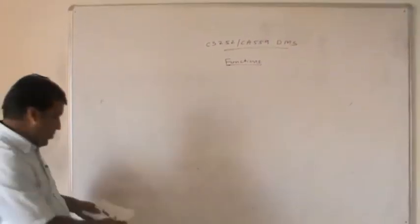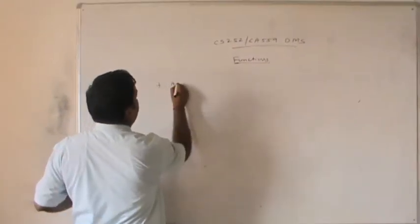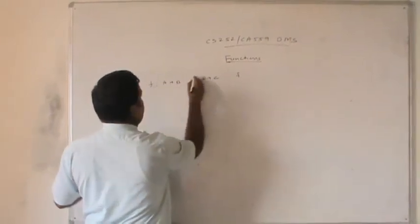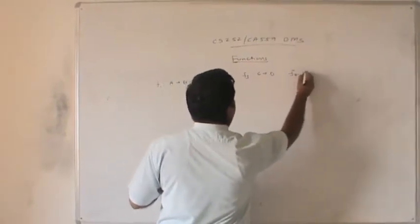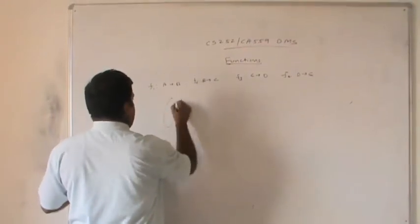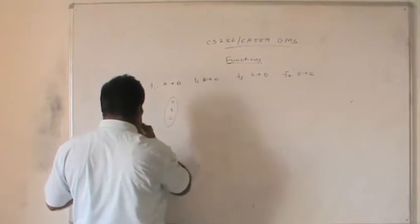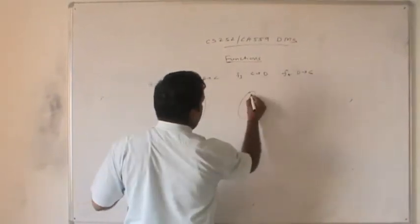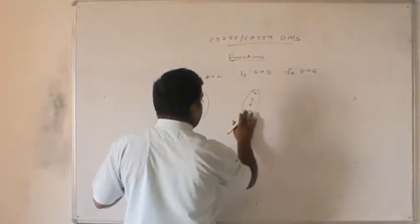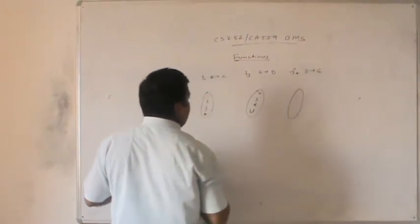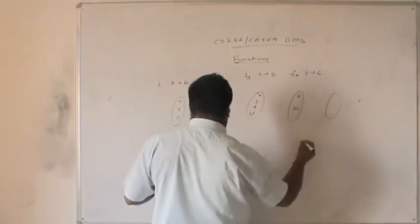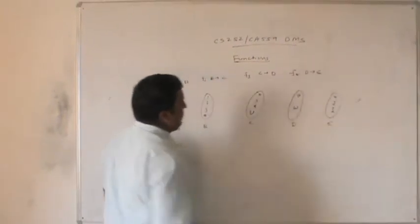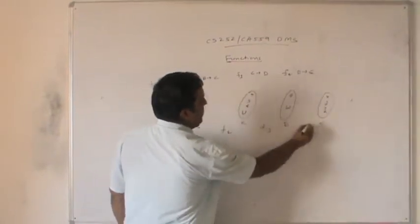With an example, we can identify which function is 1-to-1, onto, or invertible. We take sets A, B, C, D, E — each with 3 elements — with functions F1: A→B, F2: B→C, F3: C→D, F4: D→E. Set B has elements {1,2,3,4}, set C has {R,S,T,U}, set D has {V,W}, and set E has {X,Y,Z}.